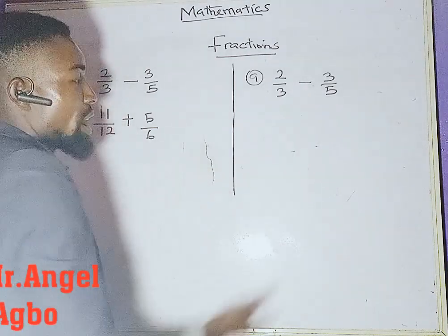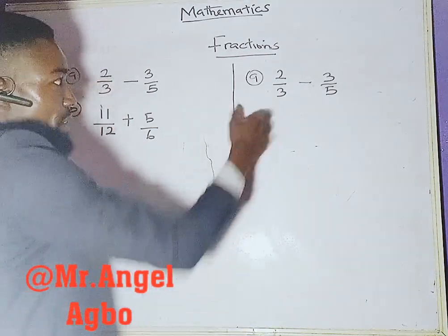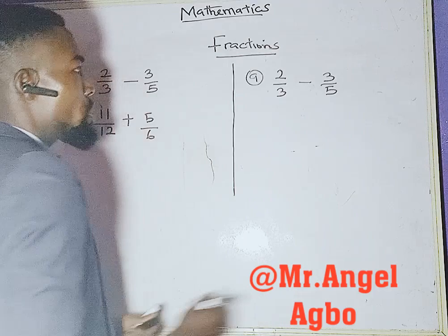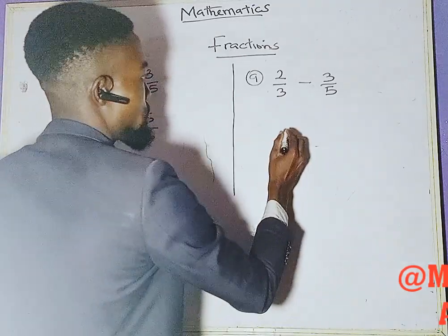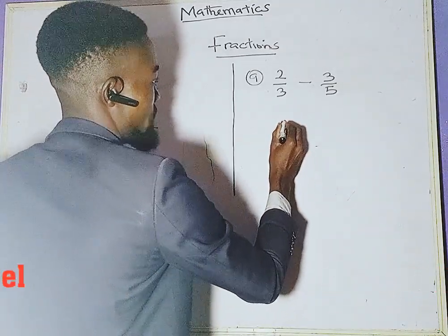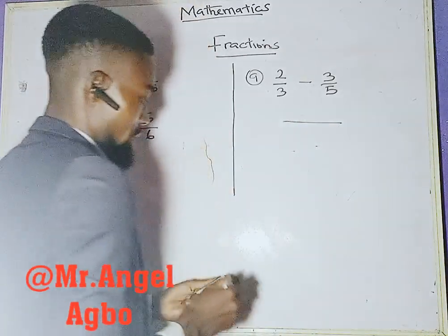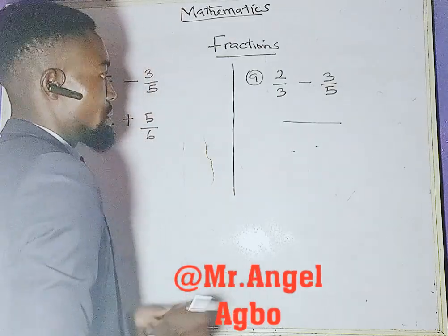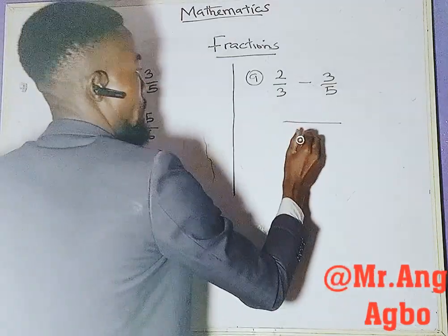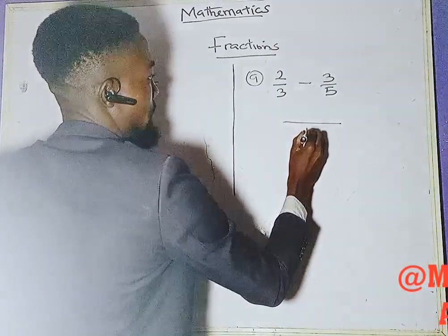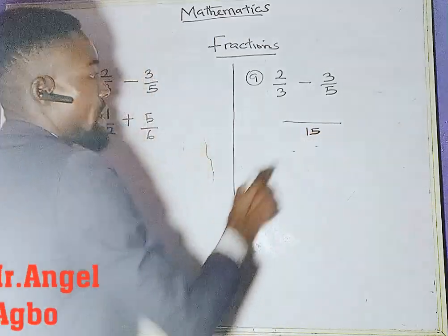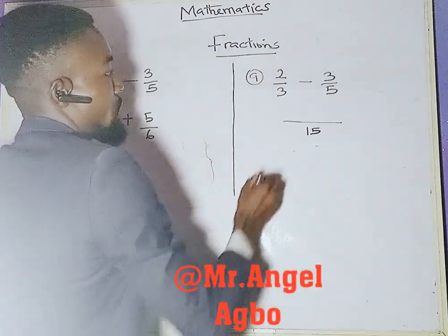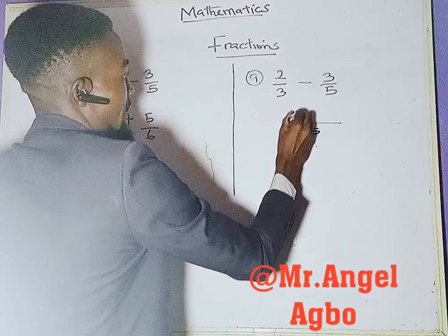15 divided by 5 gives you 3, and 15 divided by 3 gives you 5. So the next thing you do with a fraction in this form is draw a line, write the LCM which is 15. Then: 15 divided by 3 is 5, and 5 times 2 gives us 10.